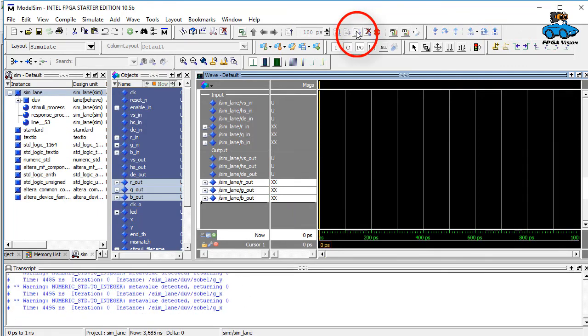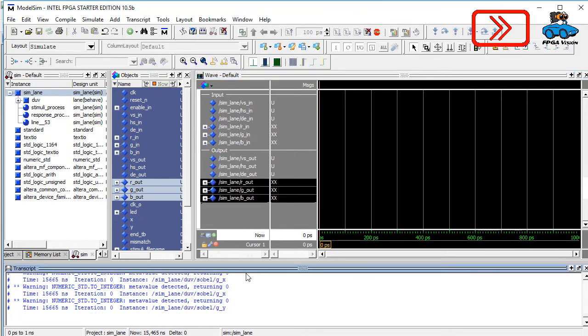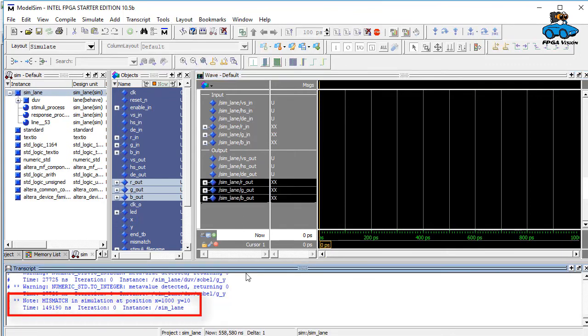We can select input and output signals to be monitored in the wave window. And then we start the simulation. At the beginning you will get some warning messages because the memories contain uninitialized values. So now you see here the note that there has been a simulation mismatch at position x1000, y10.